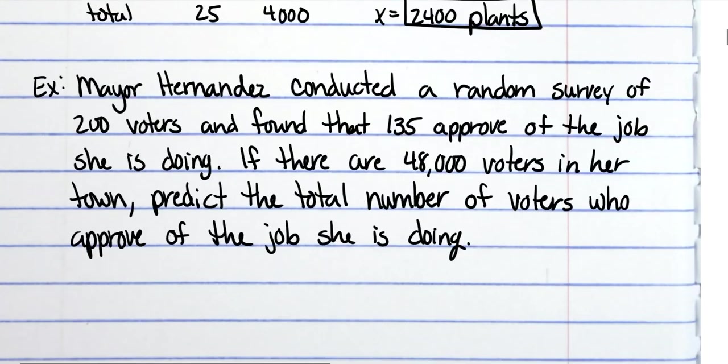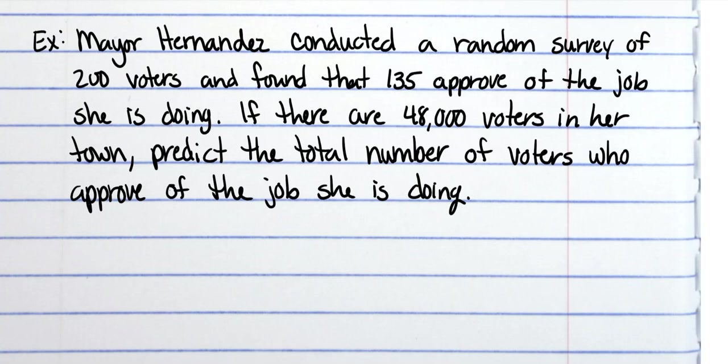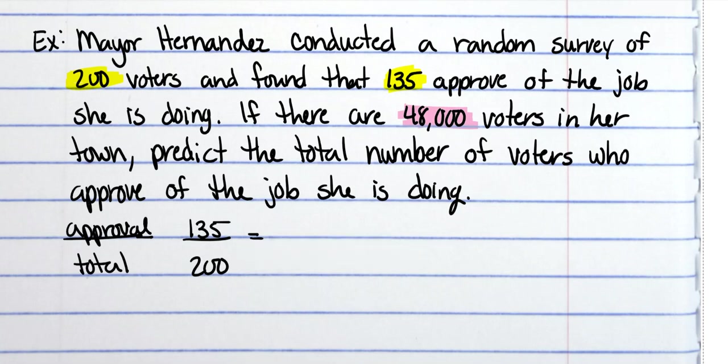Alright, so on this problem it's talking about approval rating for this mayor—so approval over a total amount of people. Remember, all fractions are part over whole, so you should always put the part on top and the whole on the bottom. But honestly, when you're cross multiplying, it really doesn't matter as long as both sets of fractions are set up the same way. So the first one—it says out of 200 total, 135 of those approve, so 135 approve over 200 total. And then it's asking if there are 48,000 voters, so that's how many total voters there are—how many can she expect to approve of her?